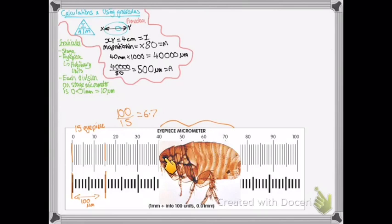Sorry if I've offended any dust mite or flea enthusiasts, but I've used a flea for this example. It doesn't really matter. What does matter is, the end of it is here on 40, and the other end is on 77. Just take my word for that. So there's 37 eyepiece divisions.